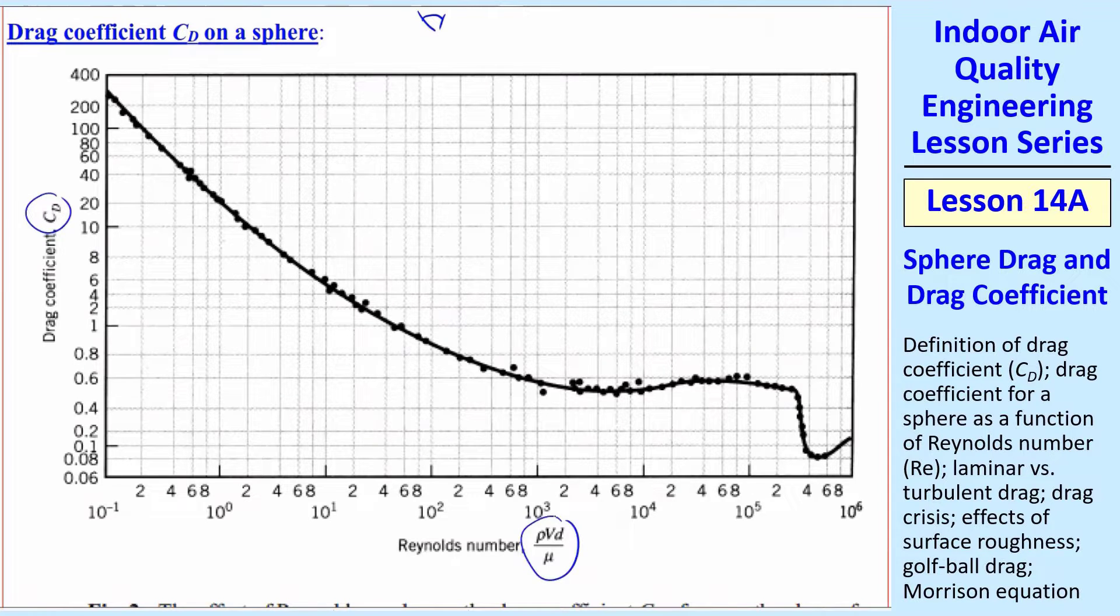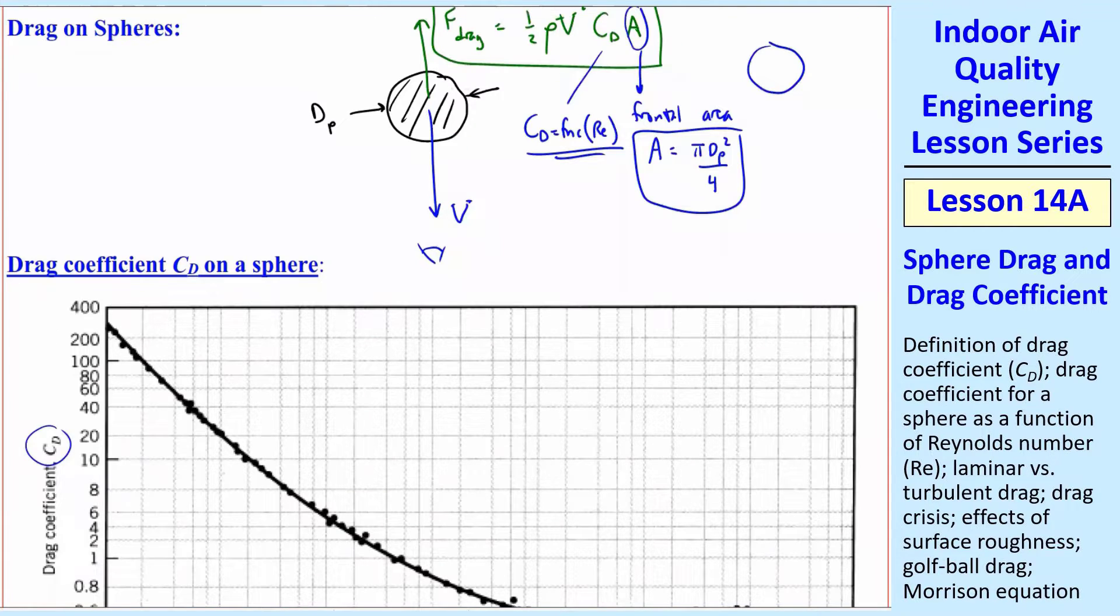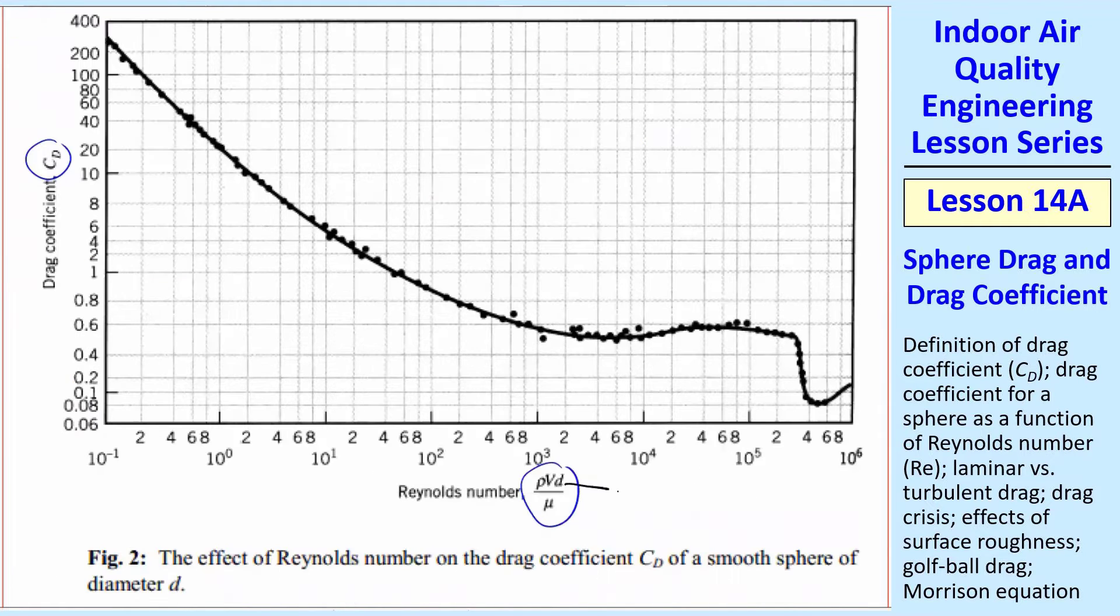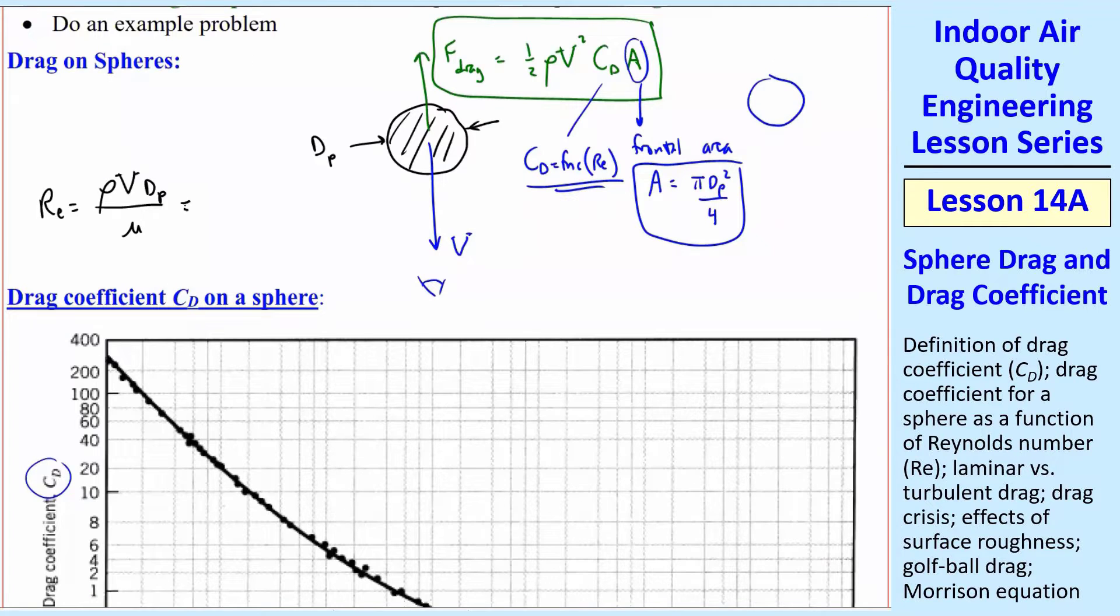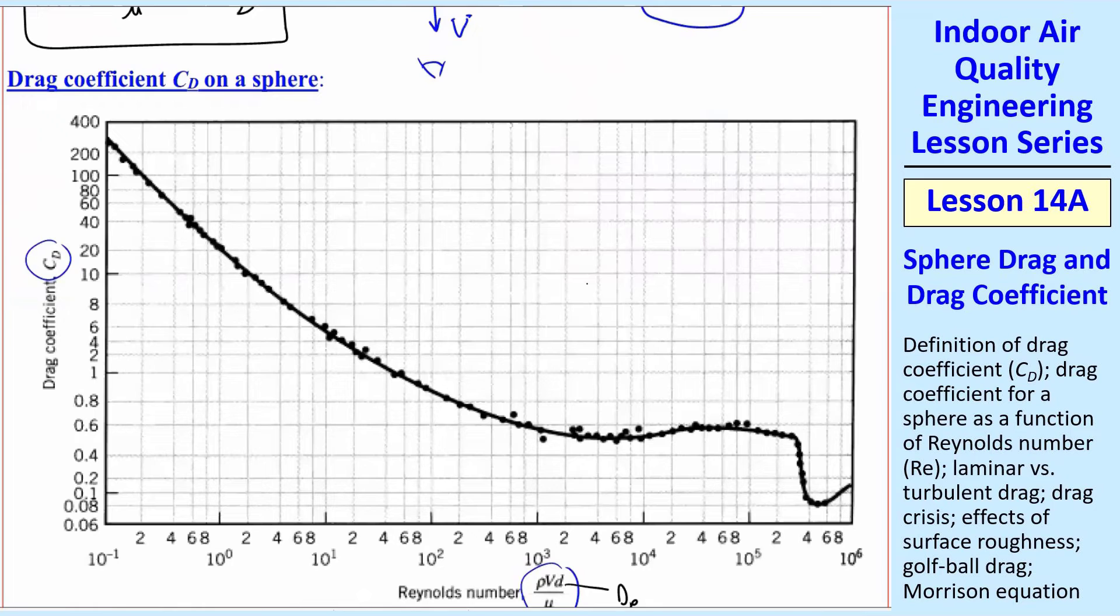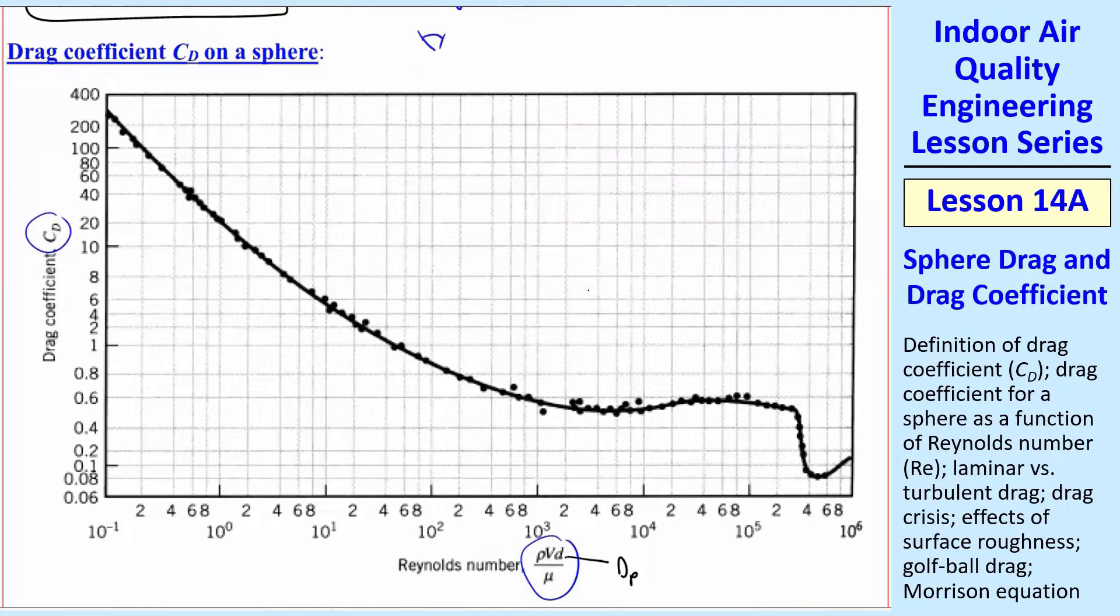And of course, Reynolds number we have to define. So in all these cases, we have a Reynolds number that's equal to rho v, the diameter of the particle, dp over mu. We're going to call this dp, or since mu over rho is equal to nu, this is equal to v dp over nu. So I just want to take a little bit of time to review what drag on a sphere looks like.